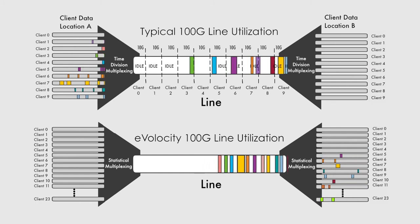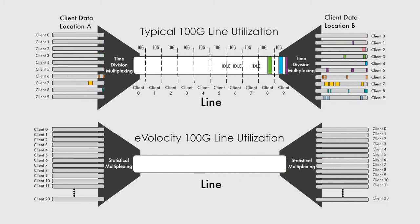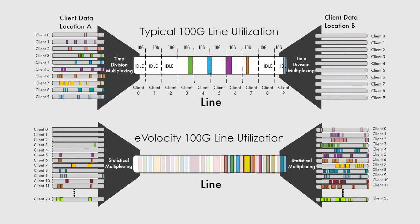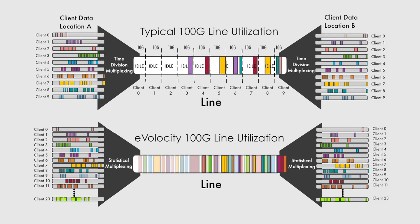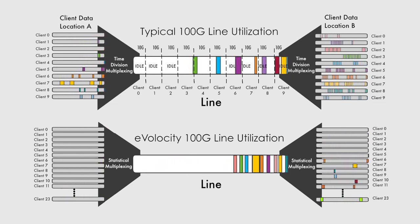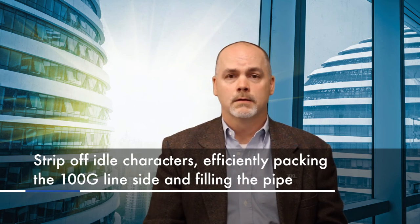In doing so, you can see how inefficient the line side utilization is. In the eVelocity 100G platform, where we're using statistical multiplexing, we are able to aggregate many more clients than in the TDM approach. What we're doing here is intelligently aggregating the client traffic. If a client is not offering a packet, the eVelocity platform will move on to the next client. In doing so, we're stripping off all of the idle characters and packing the 100G line side much more efficiently, effectively filling the pipe.